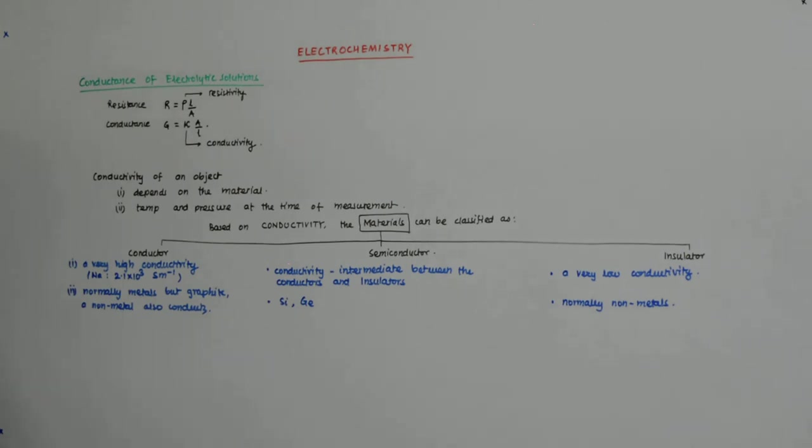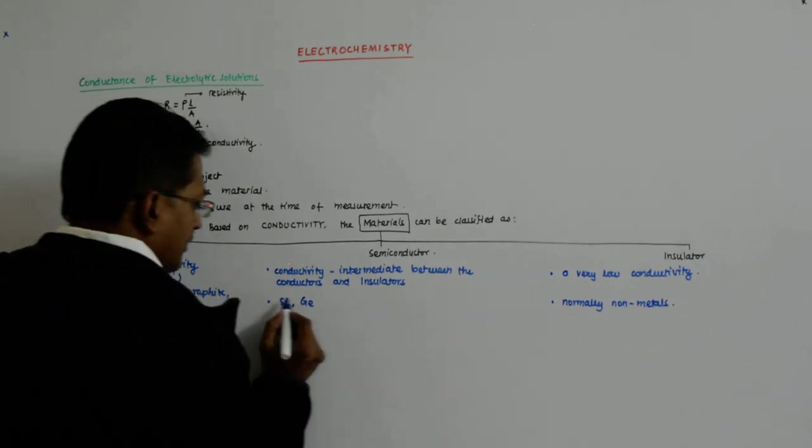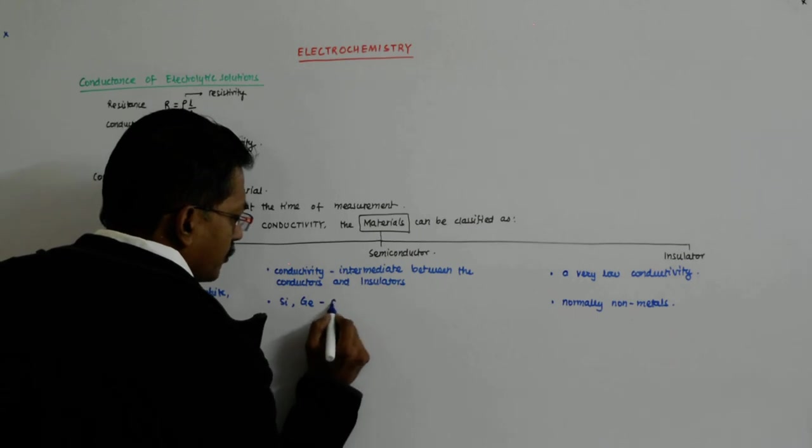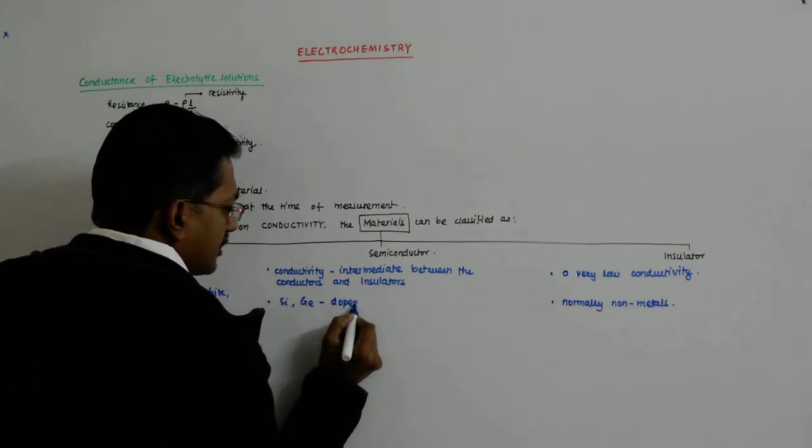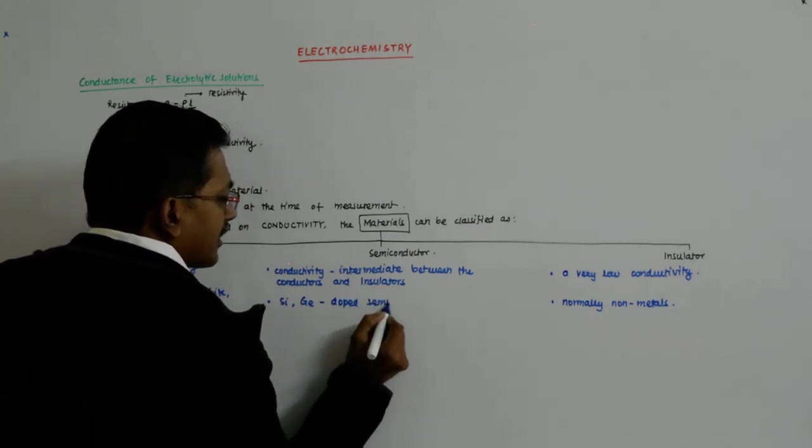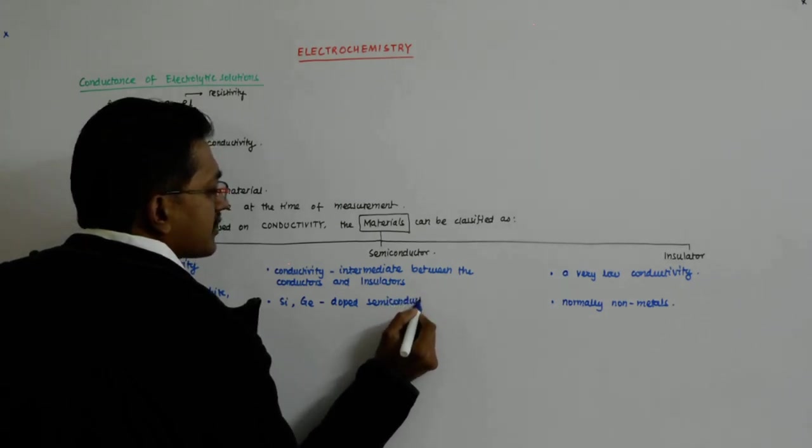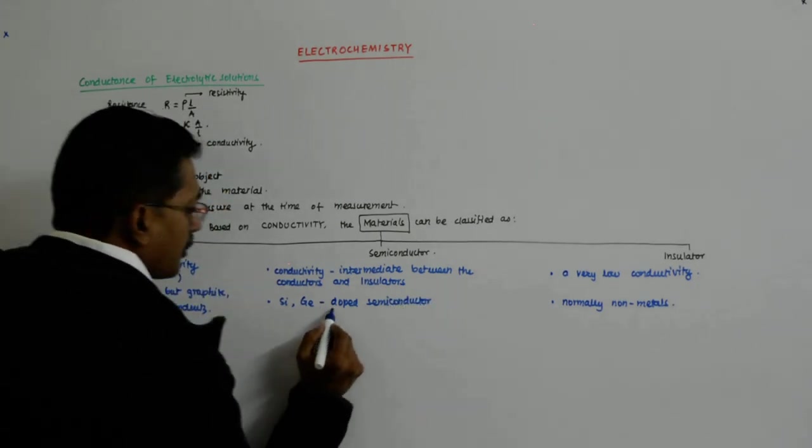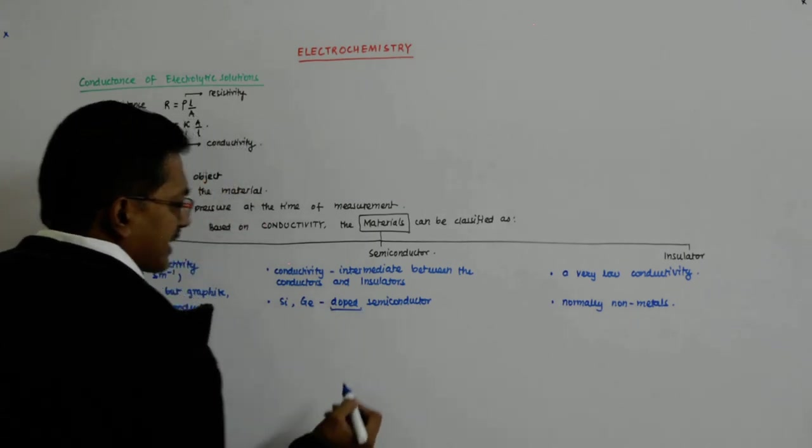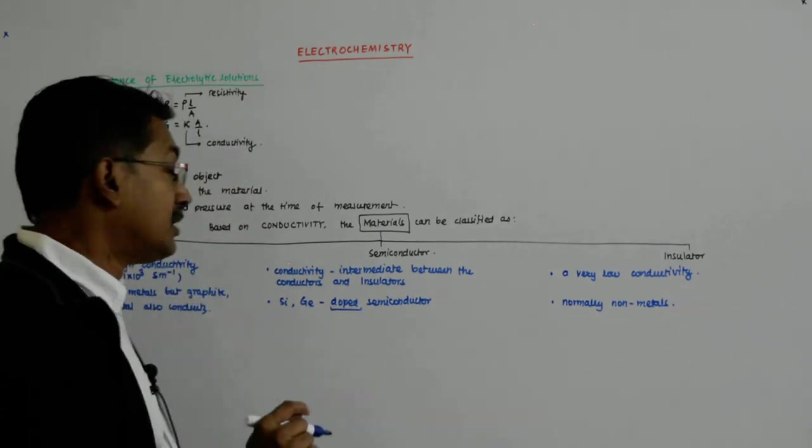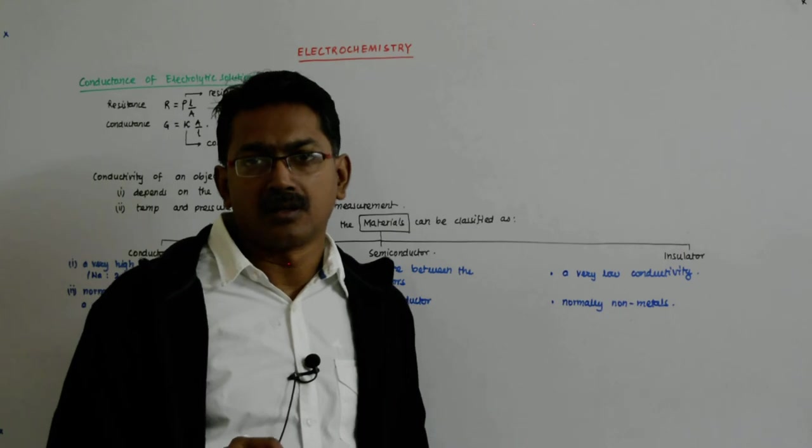Here the silicon and germanium when they are used as semiconductors they are actually the doped semiconductors. Doped semiconductors. What do we mean by doping?